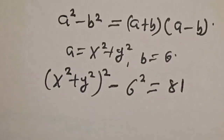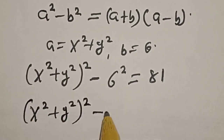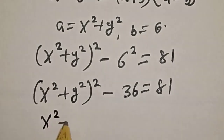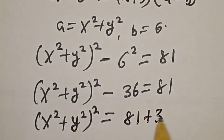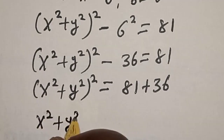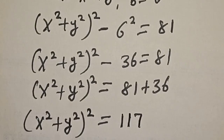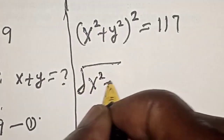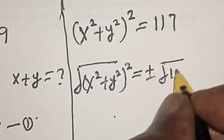This becomes x squared plus y squared, all squared, minus 36 is equal to 81. Adding 36 to both sides, we have x squared plus y squared, all squared, is equal to 81 plus 36, which is 117. Now let's take the square root of both sides: square root of x squared plus y squared squared is equal to plus or minus square root of 117.